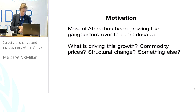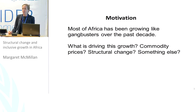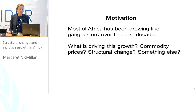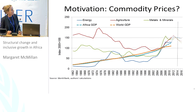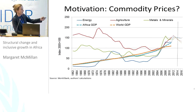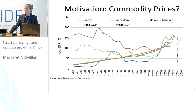The motivation for this work is that Africa has been growing relatively rapidly over the past decade or decade and a half. What we are less aware of is what exactly has been driving this growth. Is it high commodity prices? Is it structural change? Is it something else? This graph — pay attention to the red, green, and blue solid lines — shows commodity prices for African countries as a GDP-weighted average. In 2000, commodity prices started to skyrocket, so there's a lot of speculation that Africa's recent growth is based on commodity prices.